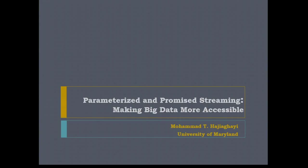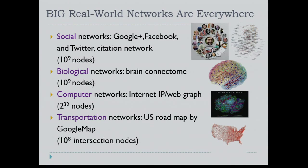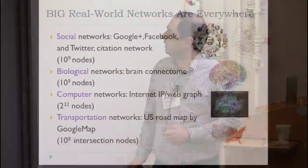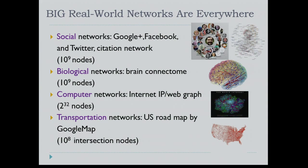Hello everyone, and thanks to the organizers for inviting me. First I'll start with some motivation, then we will go to math. We have lots of big networks nowadays. For example, social networks that we are aware of have on the order of 10^9 nodes. Biological networks like brain connectome networks are especially important for understanding brain functions.